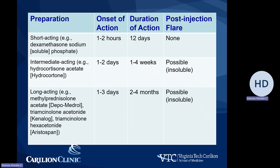Talking about injections in the hand, the agents we use include short-acting steroids like dexamethasone sodium, which has the advantage of a quick onset of action within a few hours, slightly shorter duration of action of less than two weeks, and the advantage of lack of post-injection flare as dexamethasone is water soluble. We also have intermediate and long-acting steroids; the most commonly used is probably triamcinolone, which has an onset of action around two to three days and duration of action of up to a few months.